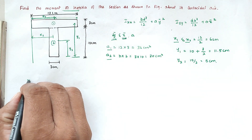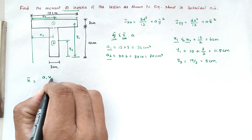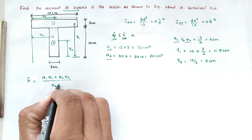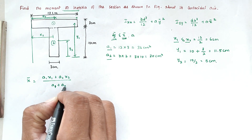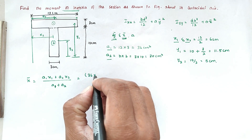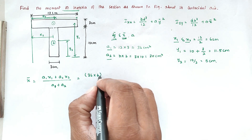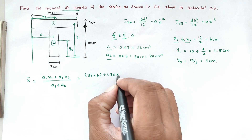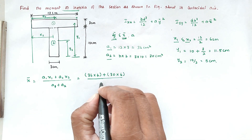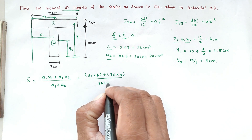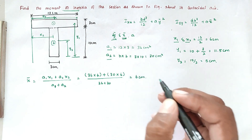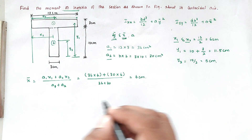The formula for x̄ is (A1·x1 + A2·x2) divided by (A1 + A2). Substituting: (36 × 6 + 30 × 6) divided by (36 + 30). Solving this gives x̄ = 6 cm.